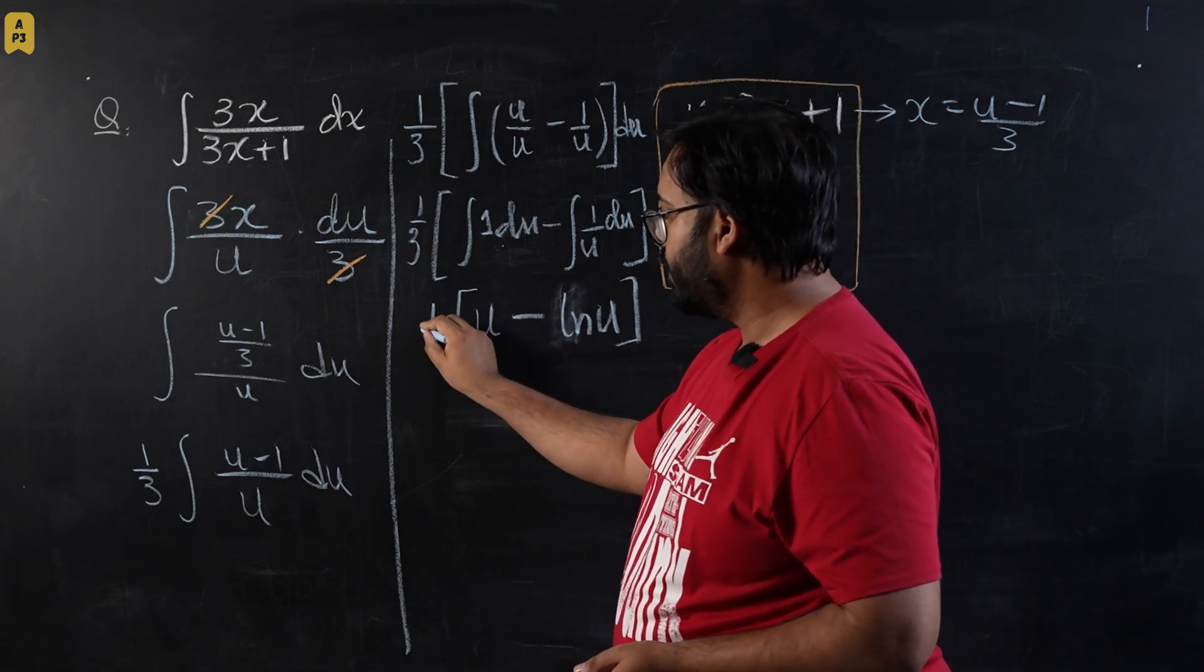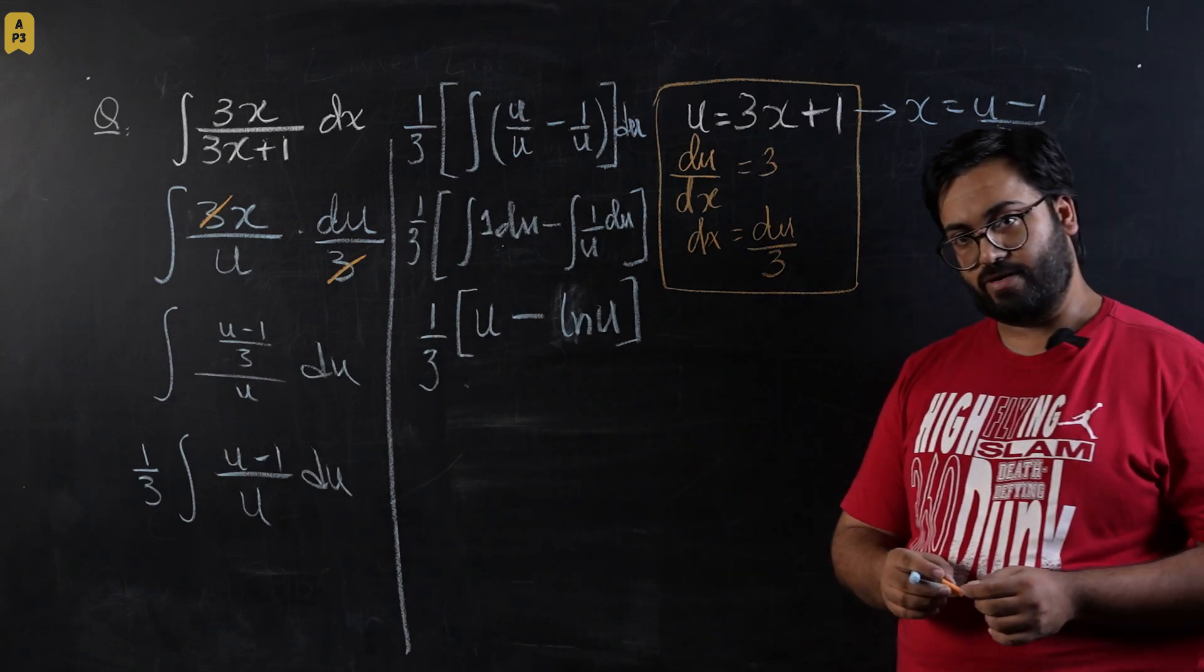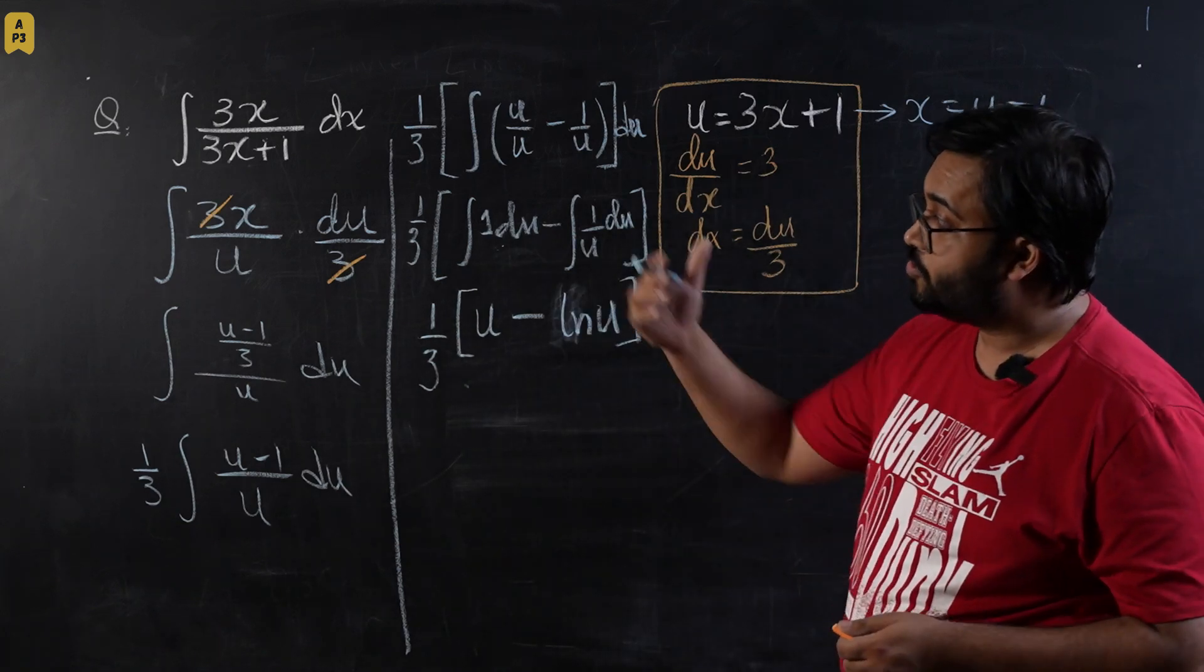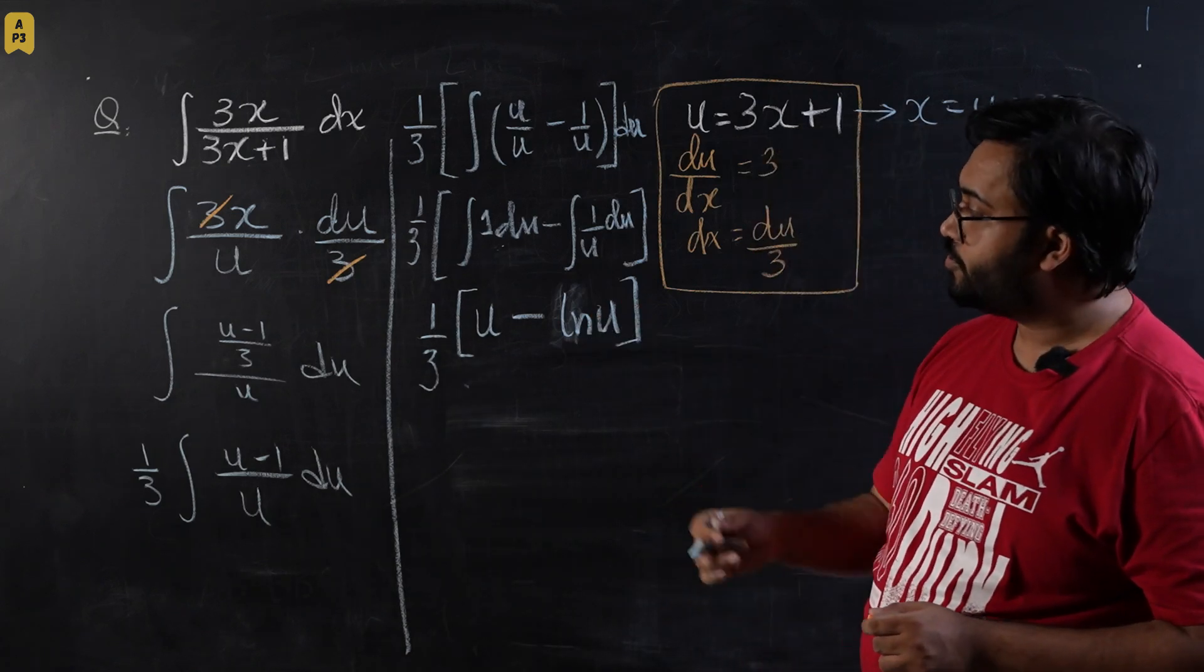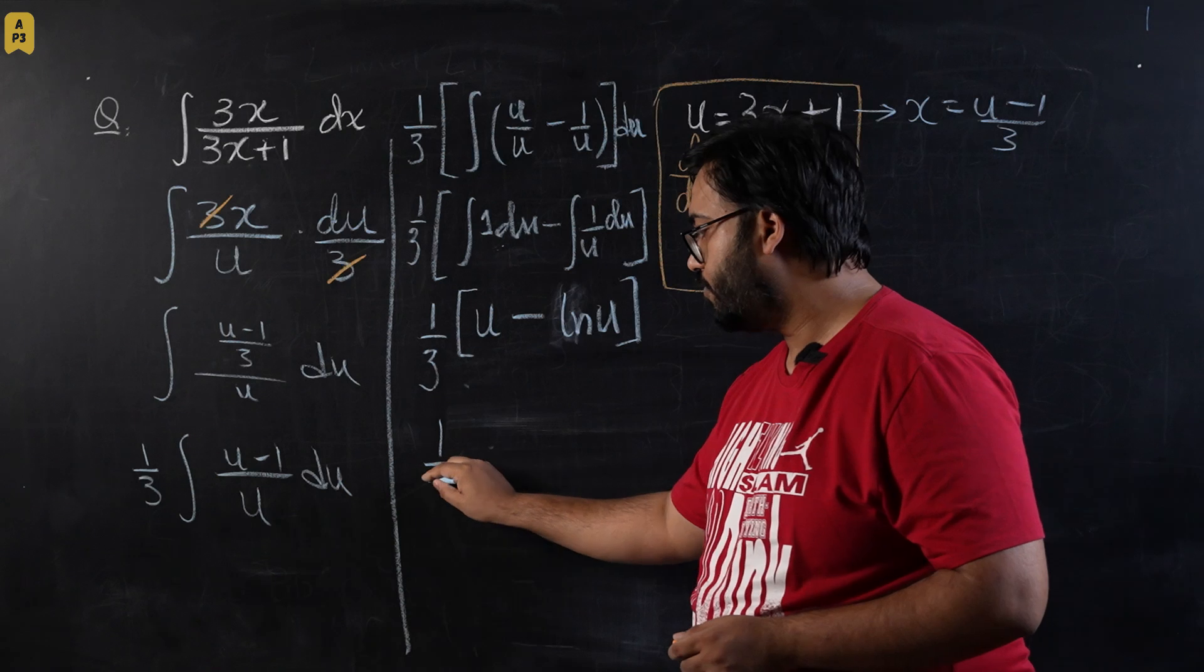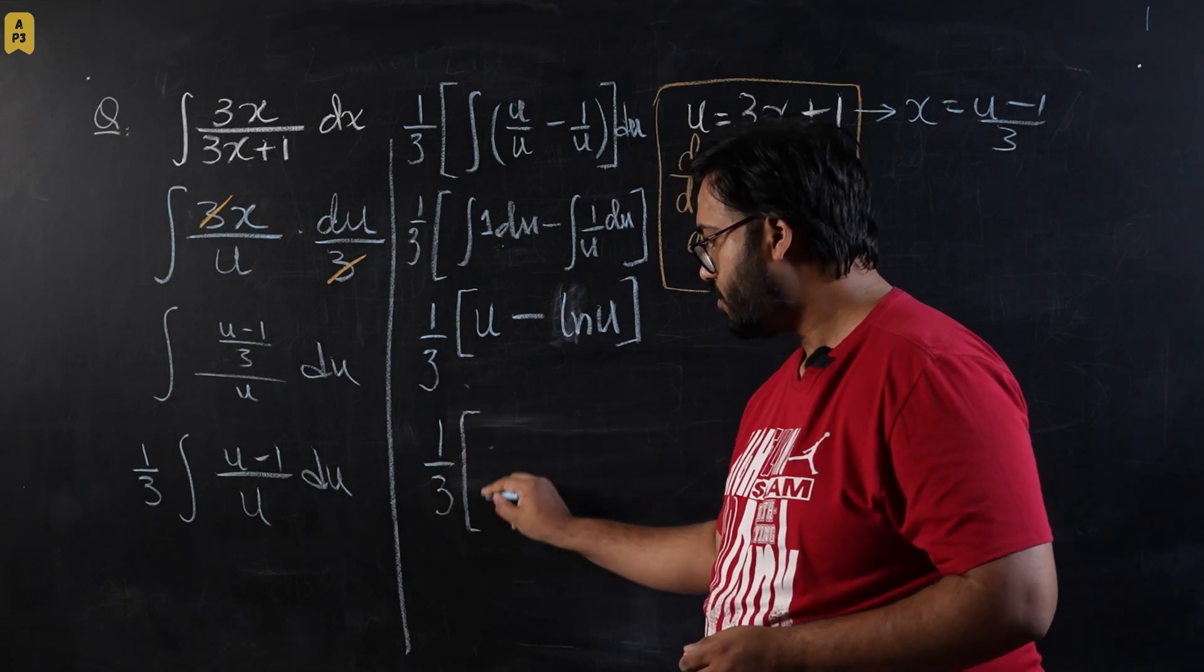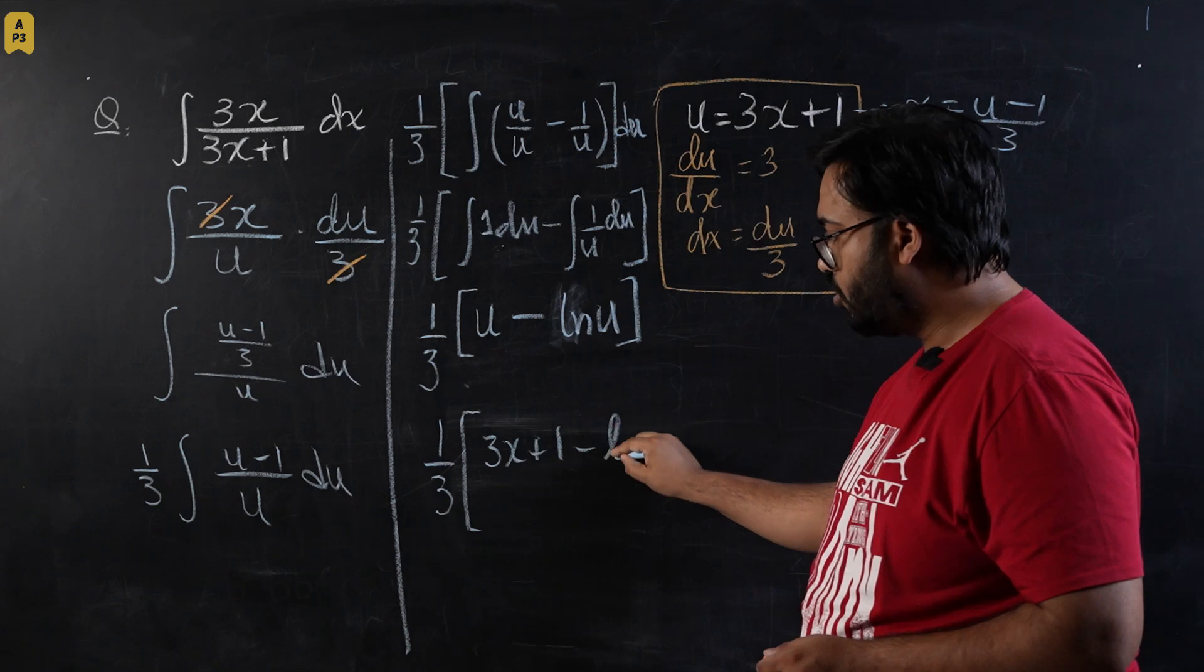So this is our integration for this expression. Now since there are no limits and we want to give our answer in terms of x, we are going to replace u with 3x plus 1. So I'm going to say this is 1 over 3 times 3x plus 1 minus log of 3x plus 1.